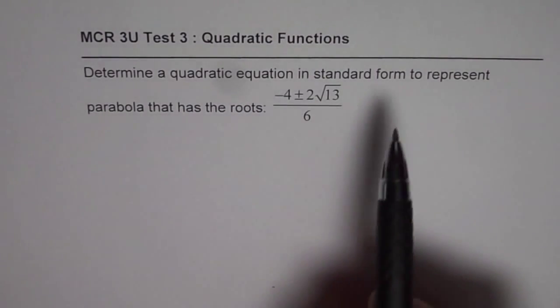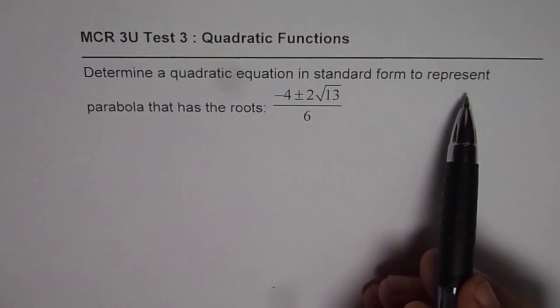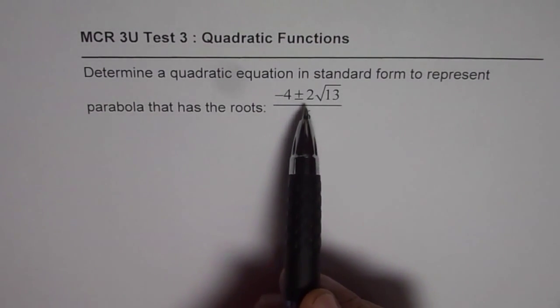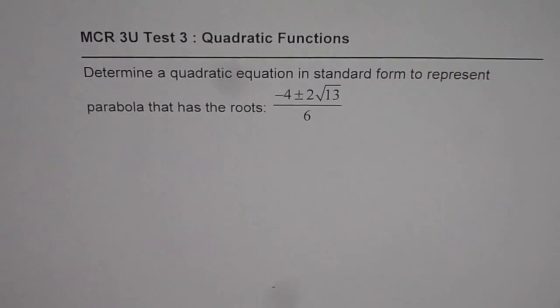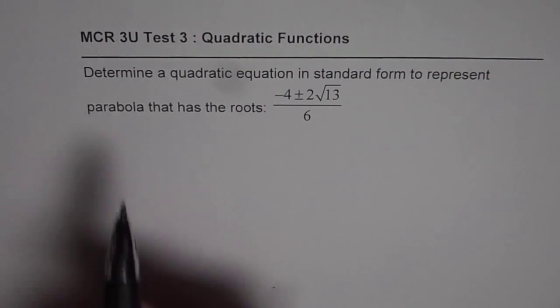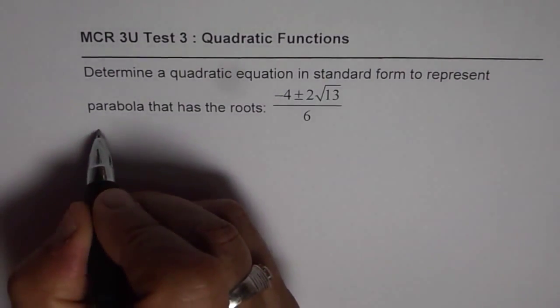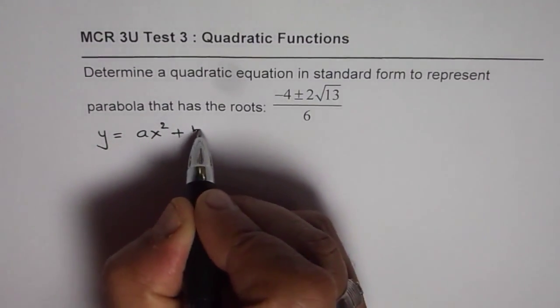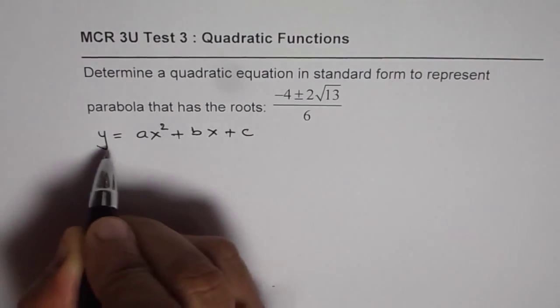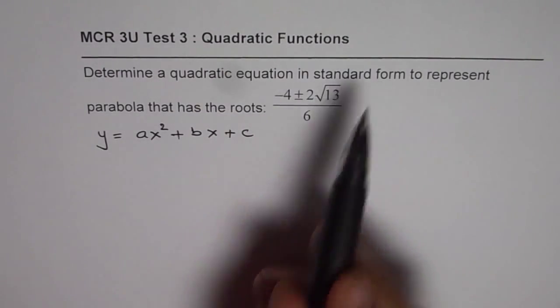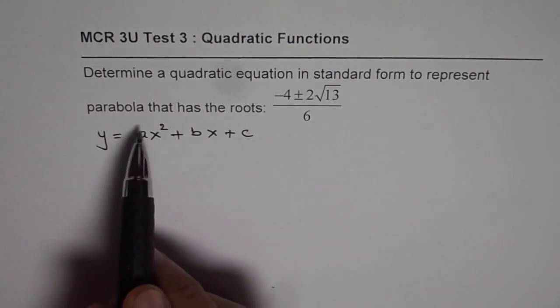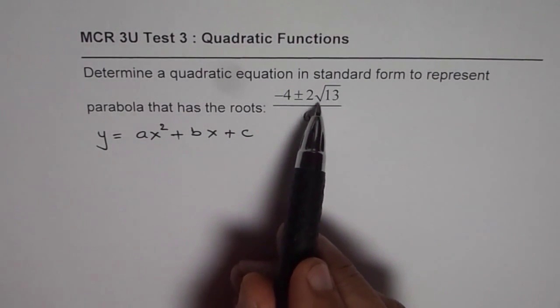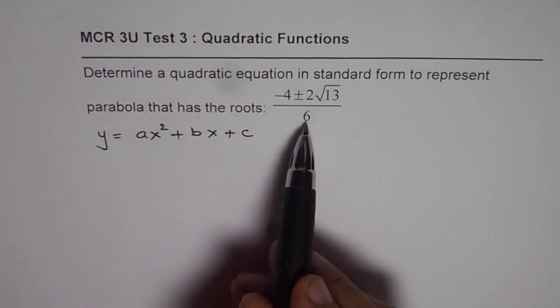Determine a quadratic equation in standard form to represent a parabola that has roots minus 4 plus minus 2 square root 13 over 6.